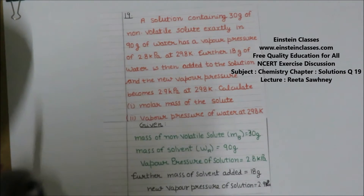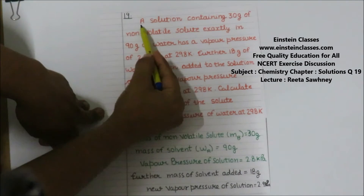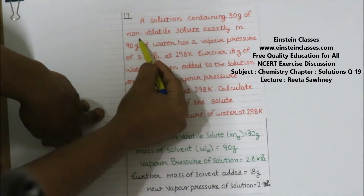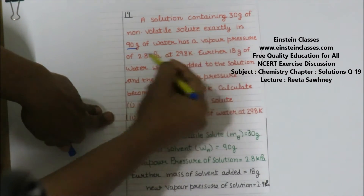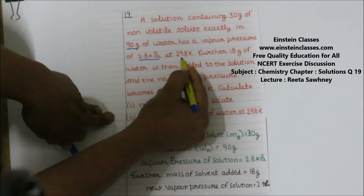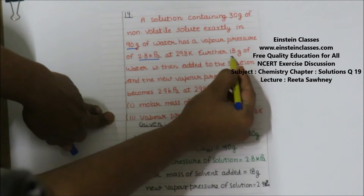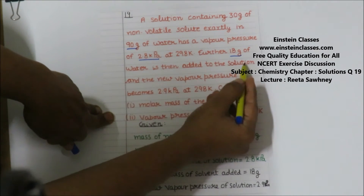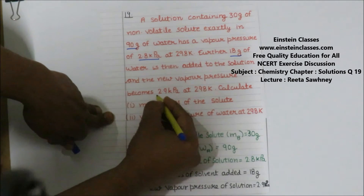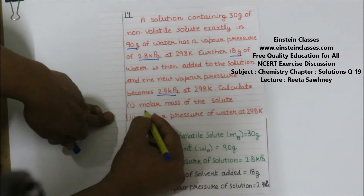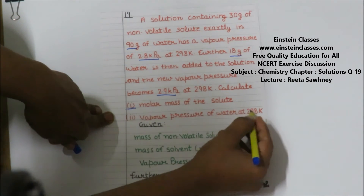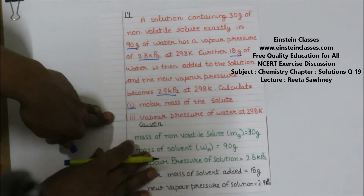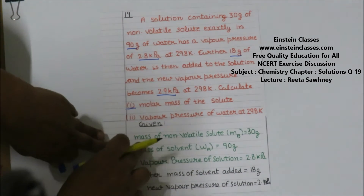We are going to discuss the NCERT back exercise problem, number 15 of solutions. The problem is: a solution containing 30 grams of non-volatile solute exactly in 90 grams of water has a vapor pressure of 2.8 kilopascal at 298 Kelvin. Further, 18 grams of water is then added to the solution and the new vapor pressure becomes 2.9 kilopascal. Calculate: first, the molar mass of the solute, and second, the vapor pressure of water at 298 Kelvin.